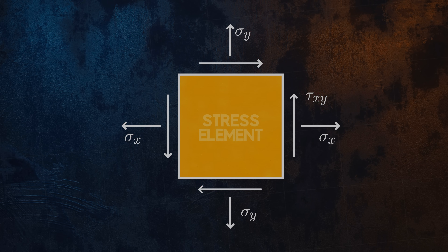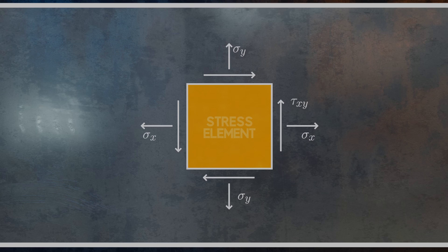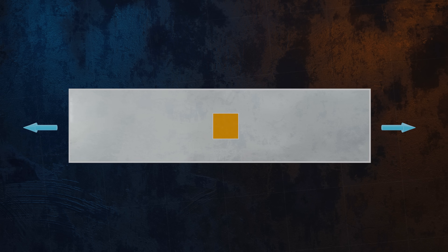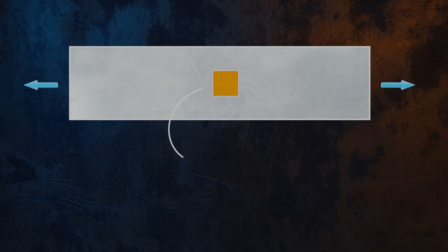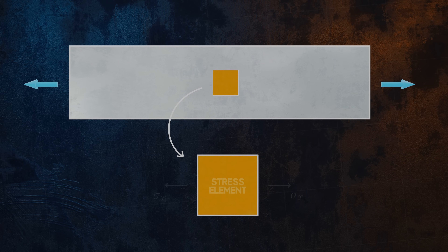Let's look at a simple example of a beam under axial load. Our stress element is aligned with the direction of the applied load, and so the stress state will be very simple. We will only have a normal stress of sigma x, sigma y, and the shear stresses will be zero.